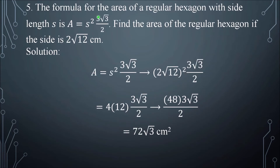Number 5. The formula for the area of a regular hexagon with side length s is A = s² × (3√3 / 2). Find the area of the regular hexagon if the side is 2√12 cm. Substitute 2√12 for s in the formula.